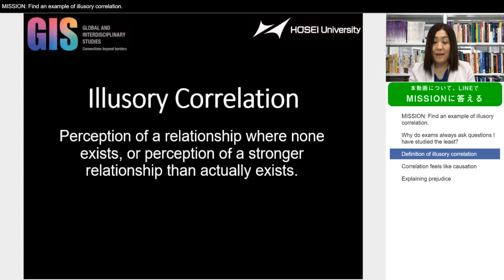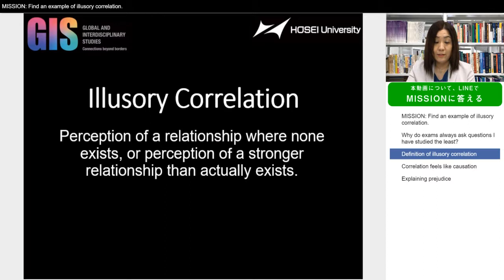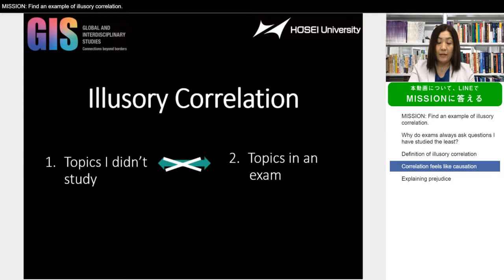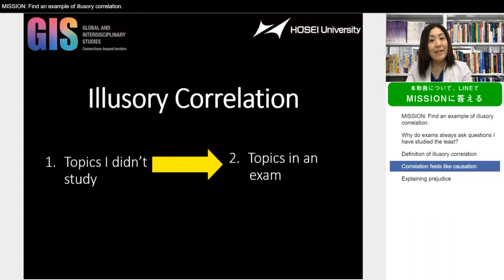By now you understand what illusory correlation is. Illusory correlation is the perception of a relationship where none exists, or the perception of a stronger relationship than actually exists. The problem can go even further — not only do we perceive a relationship that isn't there, we even perceive causality. We perceive that one is causing the other: you feel that the fact that you did not study is causing the teacher to select that topic to cause you trouble.